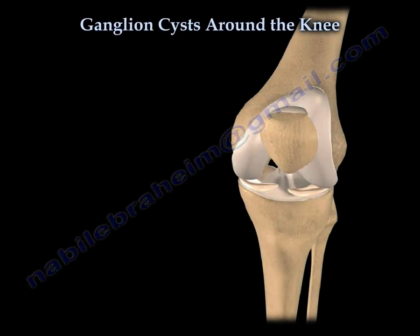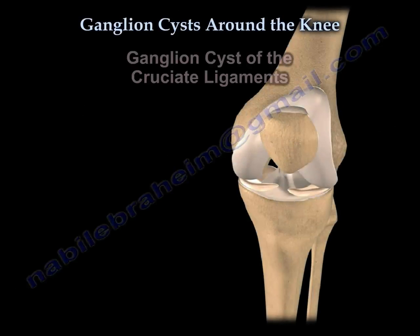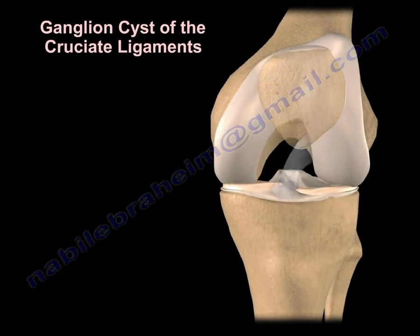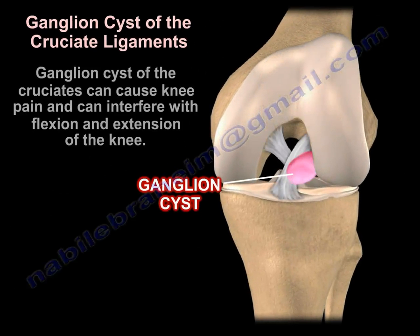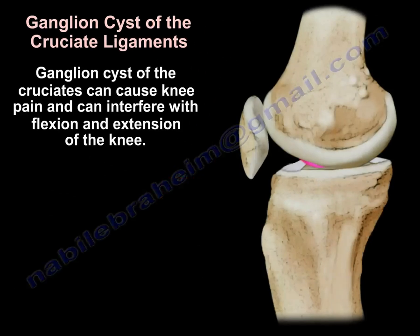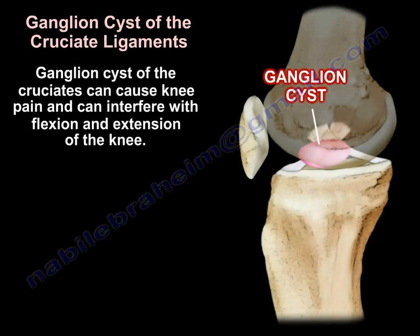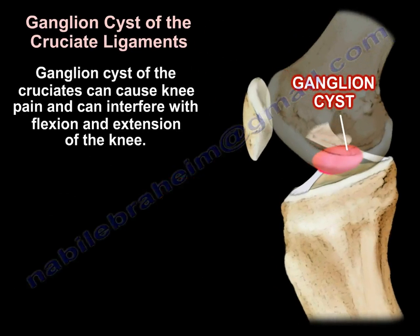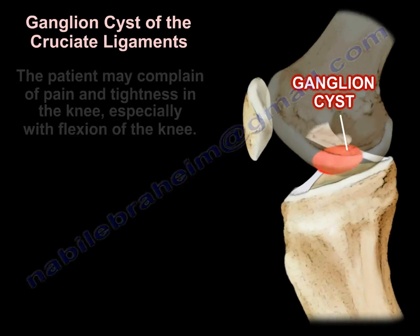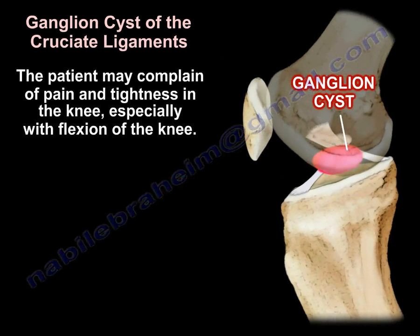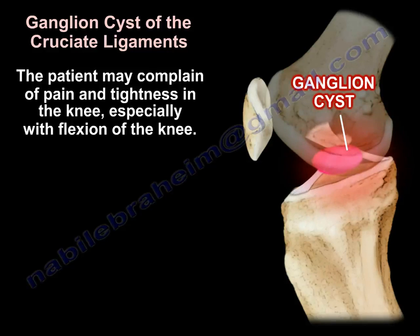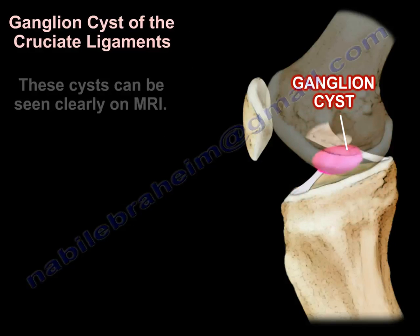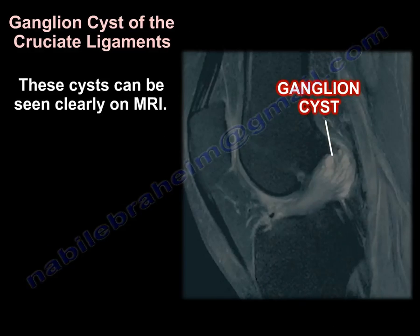Ganglion cysts around the knee — ganglion cysts of the cruciate ligaments can cause knee pain and can interfere with flexion and extension of the knee. The patient may complain of pain and tightness in the knee, especially with flexion. Ganglion cysts can be seen clearly on MRI.